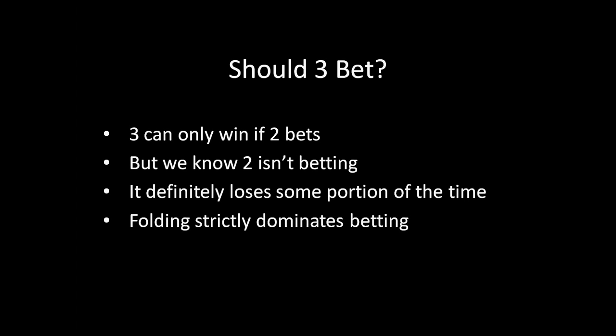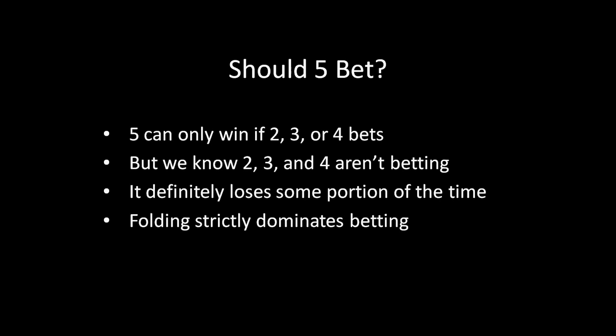Now let's go a step further. 3 can only win if 2 bets — there are no other lower cards — but we know from the previous step that 2 is going to fold. Because ace is betting, 3 will definitely lose some portion of the time if it bets. So if it can never win and will definitely lose some portion of the time, folding and receiving nothing strictly dominates betting for the 3 type. Similarly, 4 can only win if 2 or 3 bets, but we know they aren't betting, so folding strictly dominates betting for the 4 type as well.